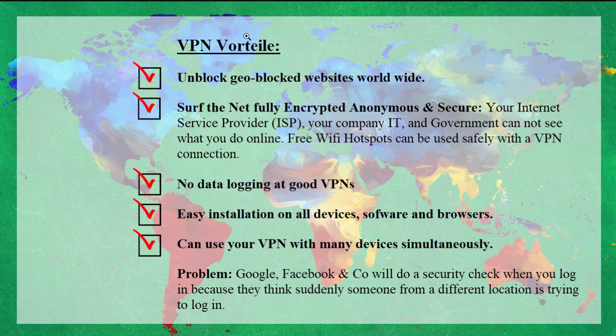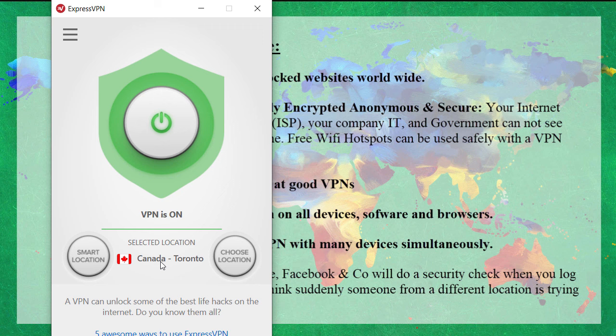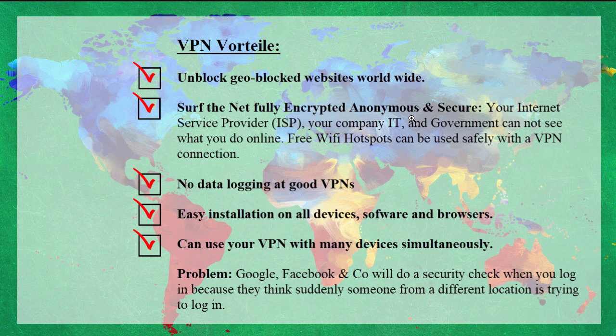Other advantages of VPNs: except unblocking geo-blocked websites worldwide, you can surf the net fully encrypted and anonymous. Even if you are in Canada, you can connect to Canadian servers and your internet connection is completely encrypted. In many cases, it makes sense to secure your internet, especially if you use WiFi hotspots. The good VPN providers don't log any data. It's easy to install the software and you can use several devices at the same time. One small issue you will find is that when you use a VPN and try to access your Google account, Google will give you a warning that someone anonymous tried to use your account from Canada. You just have to tell Google yes, that was me — everything's okay, no problem.